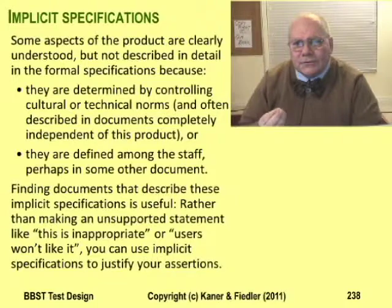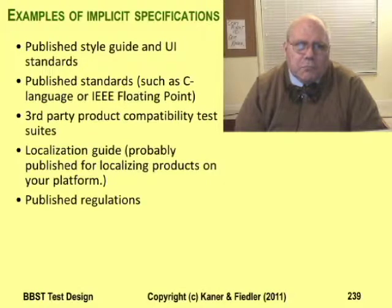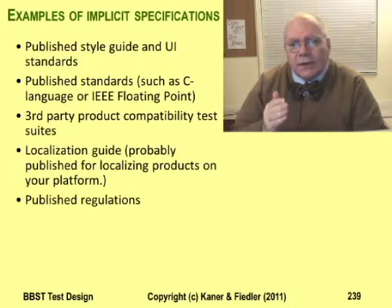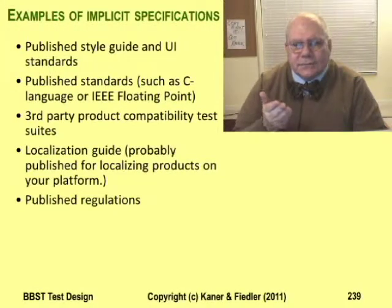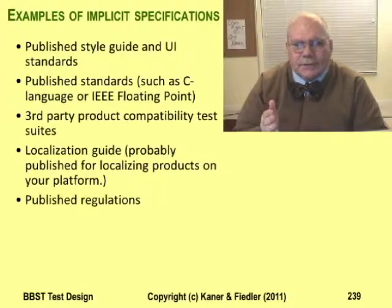Here are some examples of implicit specs. Suppose you're testing a product designed for the Macintosh and its user interface is inconsistent with the usual designs of Mac products. You could write a bug report saying 'in my opinion, this is inconsistent with Macintosh norms,' or you could write 'this is inconsistent with page 43 of the Apple Human Interface Guidelines.' Which do you think will be seen as more credible? The IEEE floating-point standard and Apple's Human Interface Guidelines are just two examples of specifications, standards, and guidelines written by other people — never mentioned in most product specs — but that are probably very persuasive to your development team.